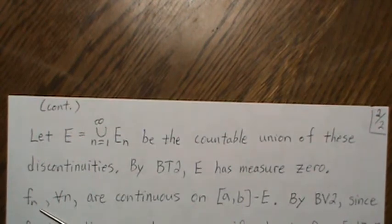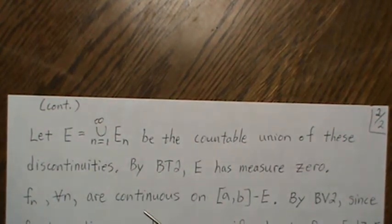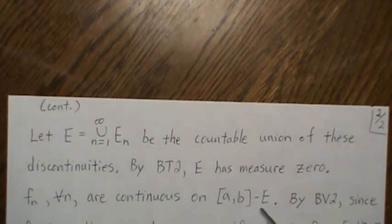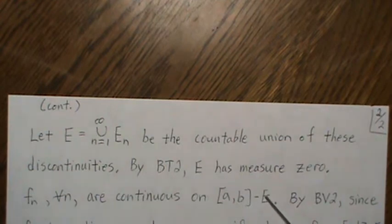So f_n, for all n, are continuous on this interval from a to b where we don't include the discontinuity points, but this is measure zero.